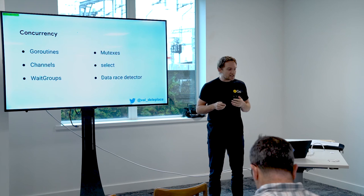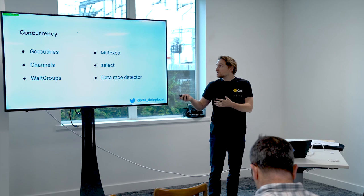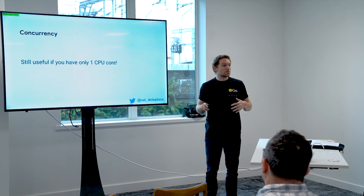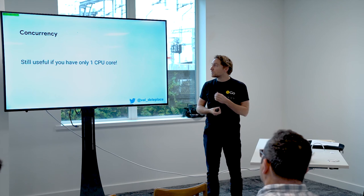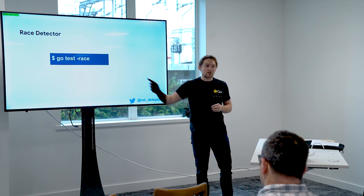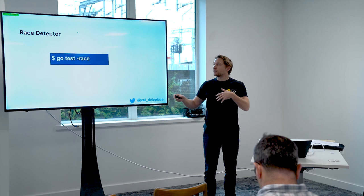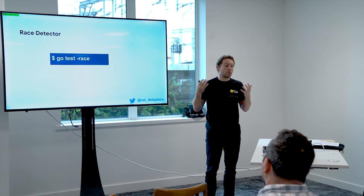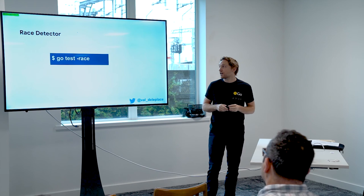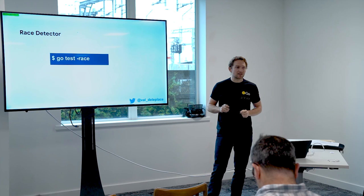A word about concurrency: gophers love concurrency with goroutines, channels, and other tools. They are powerful ways to do several things at once and help decrease the total latency of a request. It's still useful even if you have only one CPU core, because not everything uses the CPU — for example, reading from the hard drive or waiting for a network response. It's also super important to run the race detector. The race detector runs at runtime and displays a big warning if you have a concurrency bug — it detects illegal data races when several goroutines are writing or reading to the same memory location.